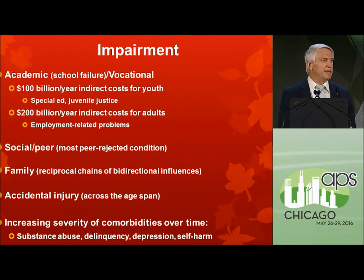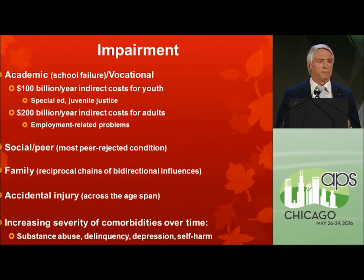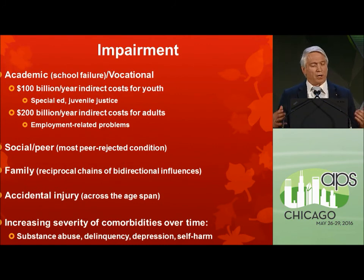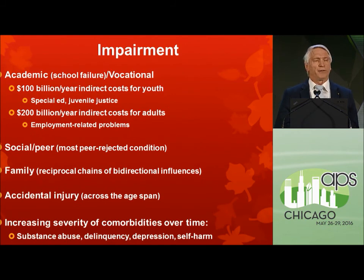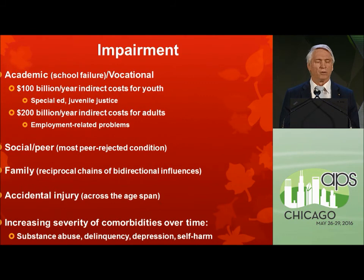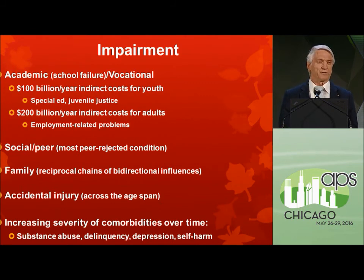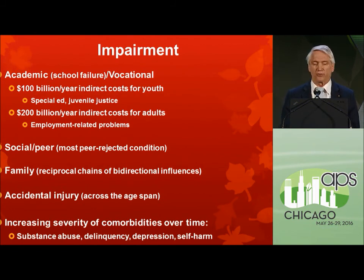Kids with ADHD, especially if they're aggressive, are less liked by their peers than any other diagnostically known group. Peer rejection is a causal factor as well as a reflection, causing difficult outcomes later on. So we need to think about treatments as affecting peer relationships, not just symptoms. Families matter — not only the genes they transmit, but the kinds of home climates for kids with ADHD are quite important mechanistically and in terms of treatment.